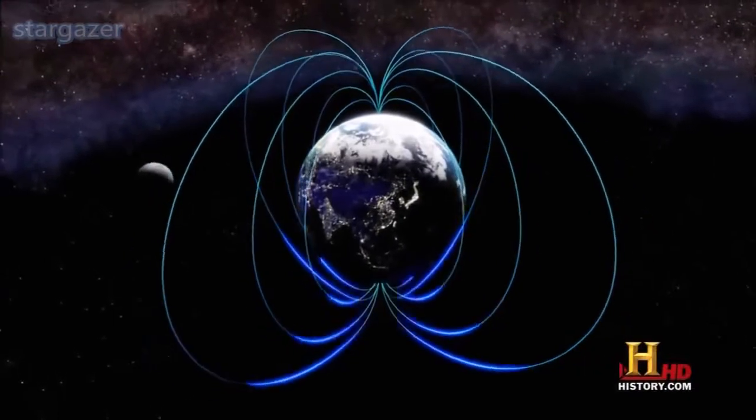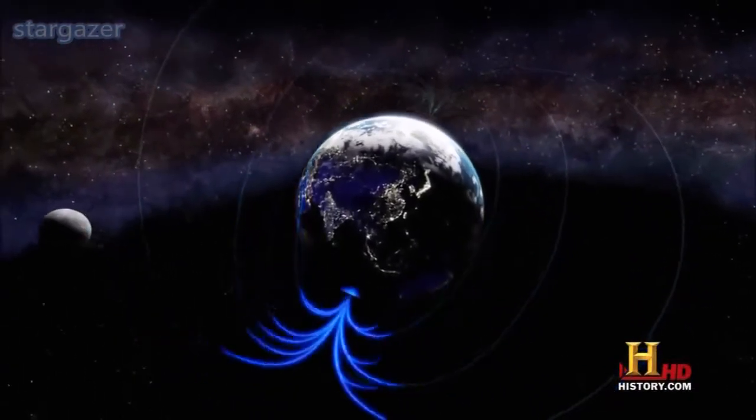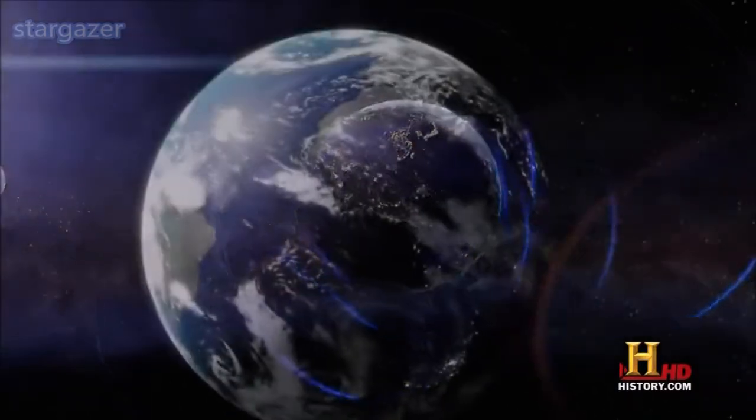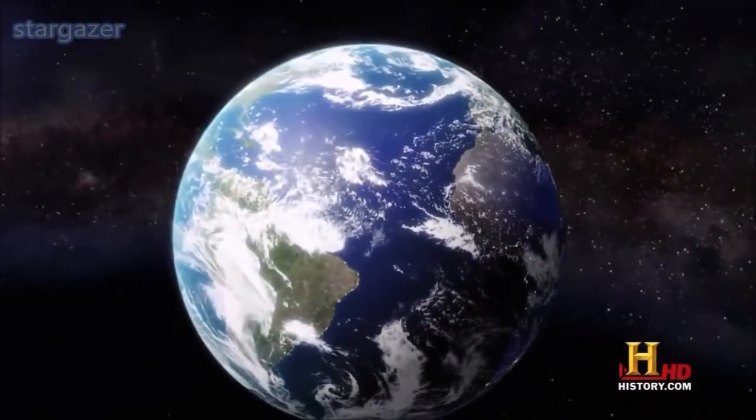When the overdue pole reversal takes place, Earth's protective magnetosphere may disappear, leaving the entire planet vulnerable to deadly magnetic storms from the sun.